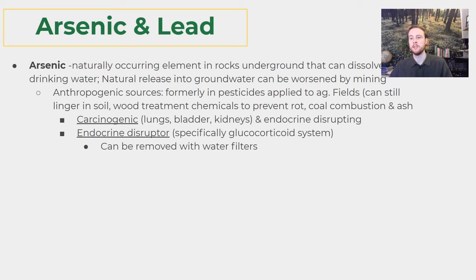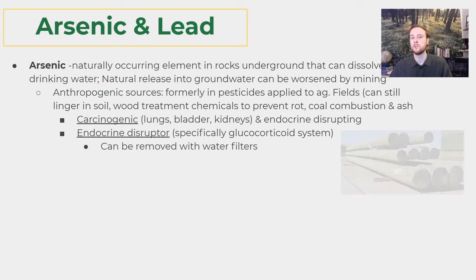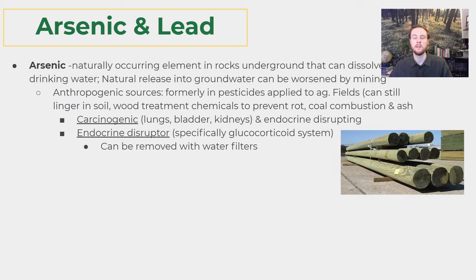Next we'll look at arsenic and lead. Arsenic, like mercury and lead, is a naturally occurring element, but it's worth emphasizing this because arsenic can contaminate groundwater sources just due to its natural release from rock. This can be worsened by mining, which exposes rocks to more weathering and enables arsenic to leach into groundwater. It was formerly used as a pesticide and was especially prominent in rat poisons, so like DDT it can persist in agricultural soils. More recently, it appears in wood treatment chemicals that prevent rot and fungus. Like mercury and lead, it can also be released through coal combustion, attached to fly ash or stored in bottom ash ponds.